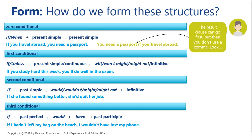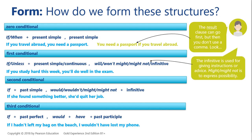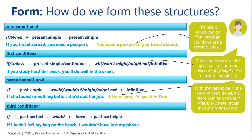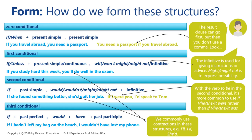The result clause can go first, but then you don't use a comma. For example: 'If you travel abroad, you need a passport' versus 'You need a passport if you travel abroad' — no comma there. The imperative is used for giving instructions or advice. 'Might' or 'might not' is to express possibility. With the verb 'to be' in the second conditional, it's more common to use 'if I/he/she/it were' rather than 'was' — using 'was' is considered informal. And we commonly use contractions in these structures, like I'll, I'd, she'd, so don't be afraid to use short forms.